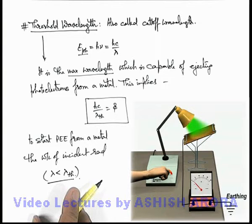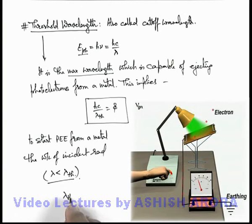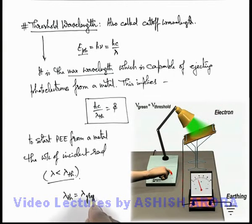Now it is turning up to green, and yes, you can see now the electrons started coming out in this situation. That means here the threshold wavelength for this situation will be the wavelength of green color.